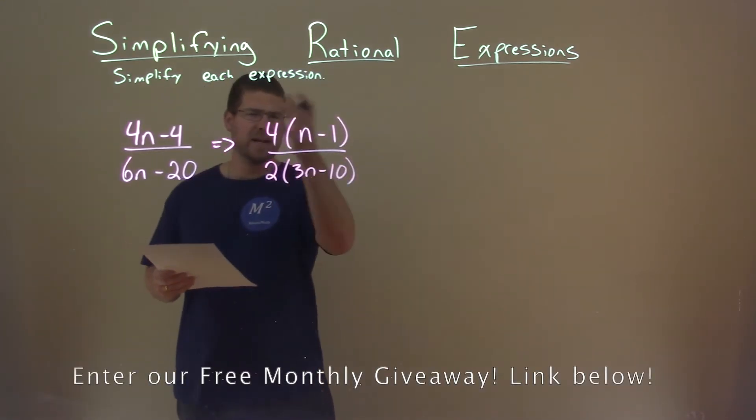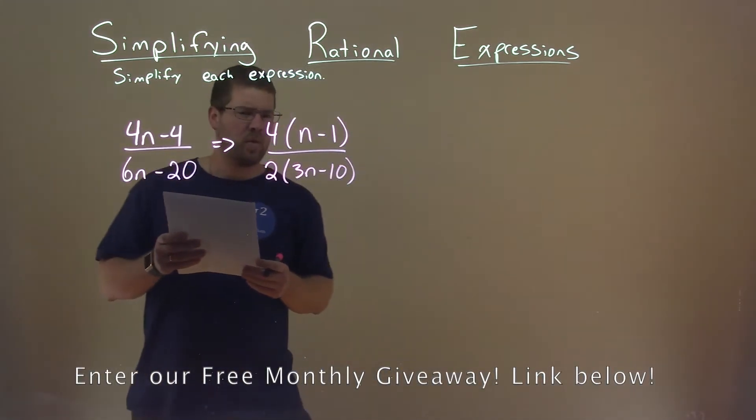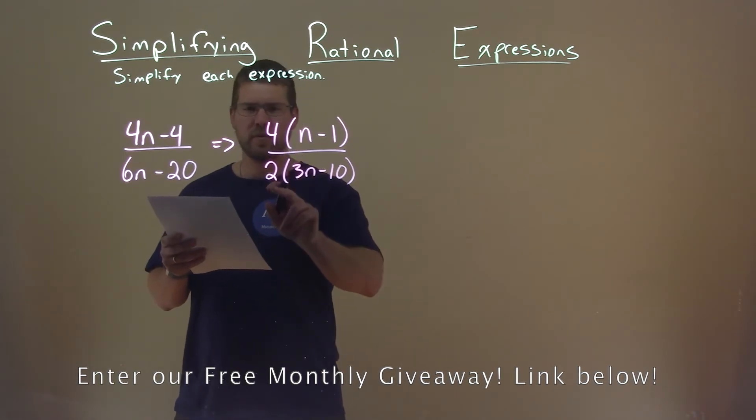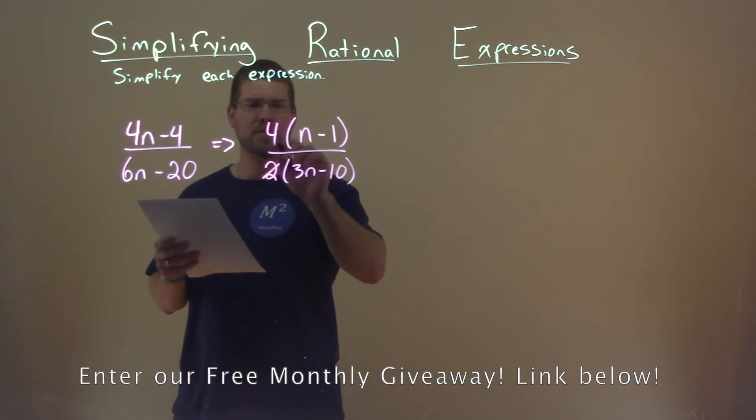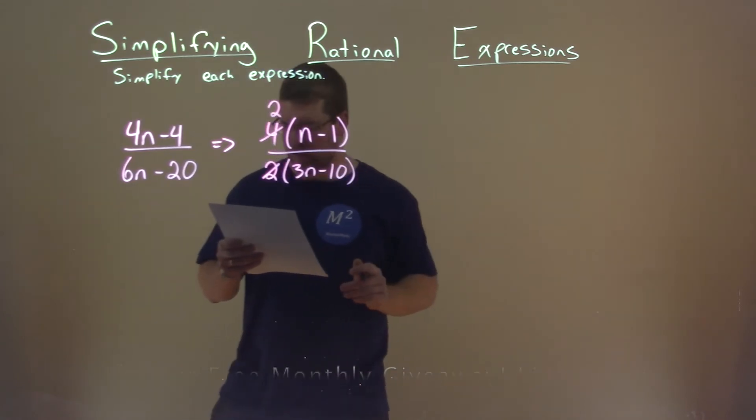So now I have it kind of simplified, but not all the way. Notice the 4 and the 2. If I take 4 and divide it by 2, I'm left with a 2 in the numerator.